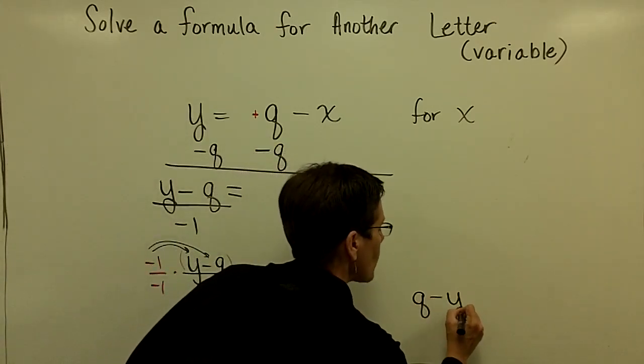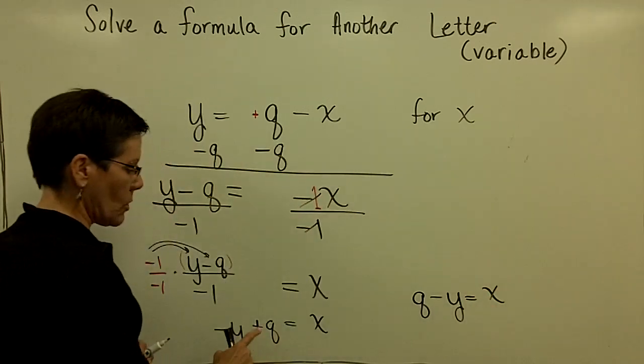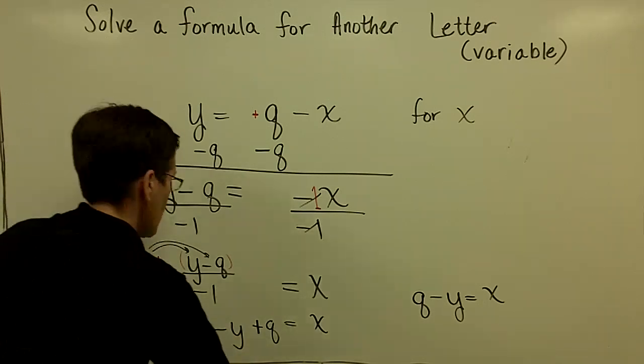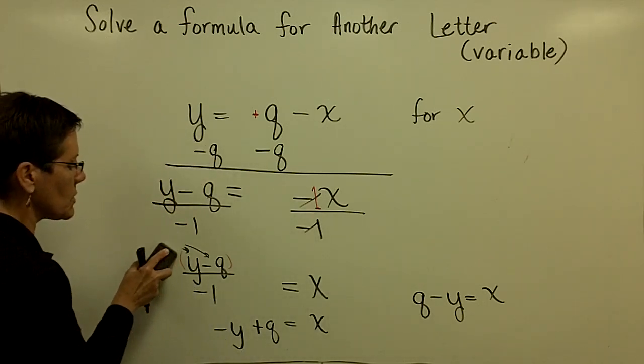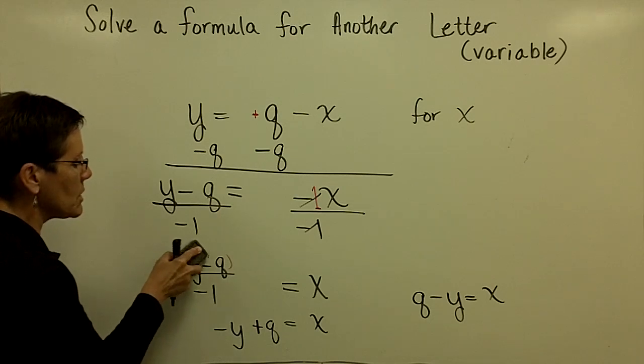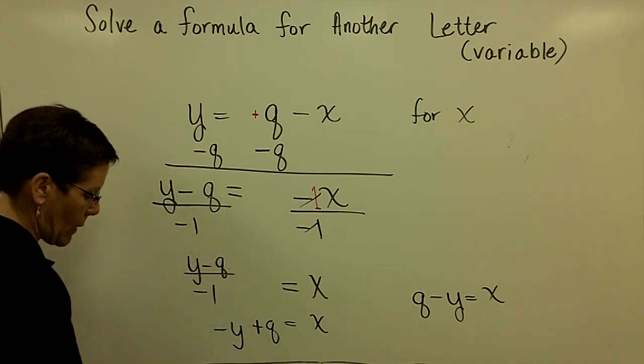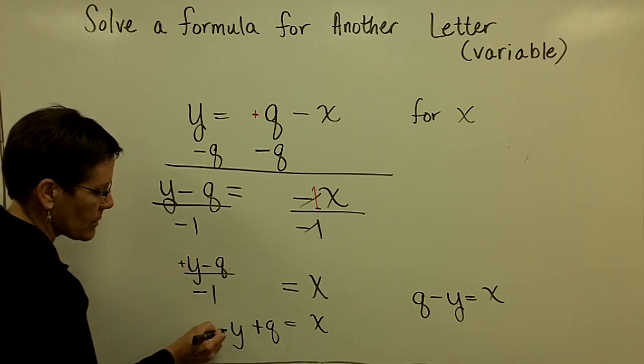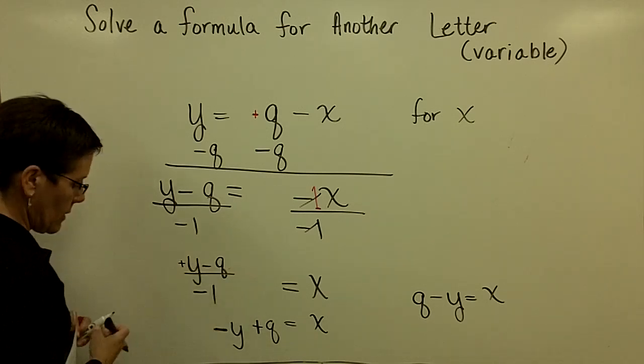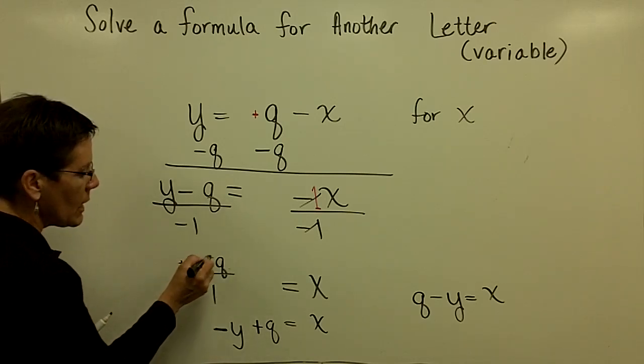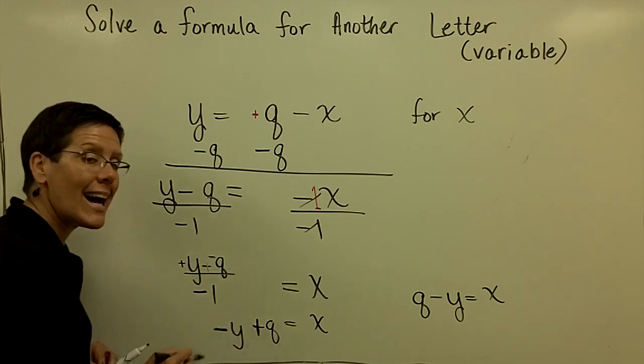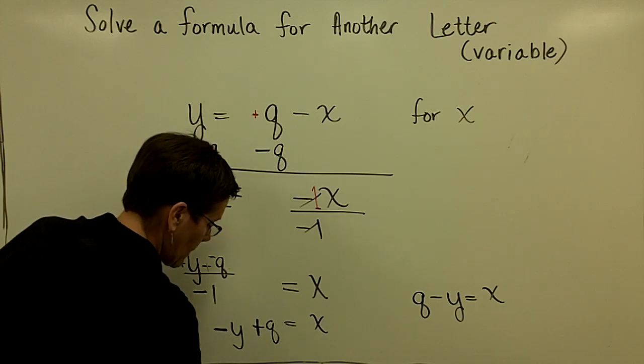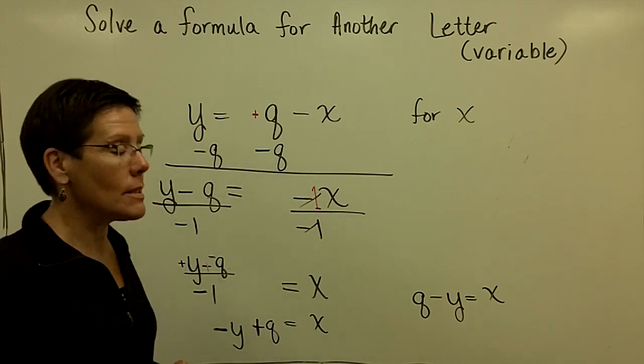Another option: because you want to divide both of those terms by a negative 1, this positive y divided by a negative 1 is a negative, and this is essentially a negative q, and this negative divided by a negative is that positive. So another way to take a look at that. I was solving for x and that had a negative 1 in front of it. That's more challenging.